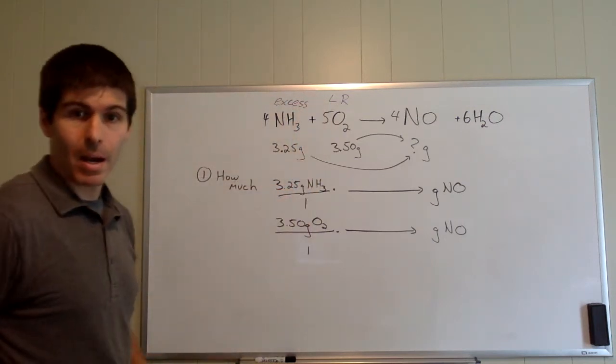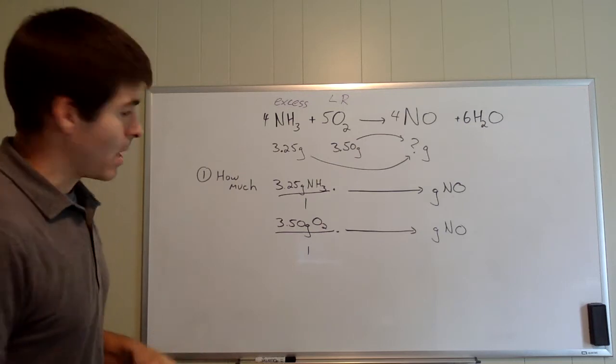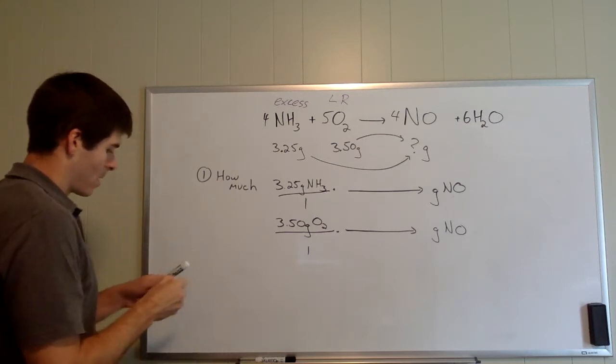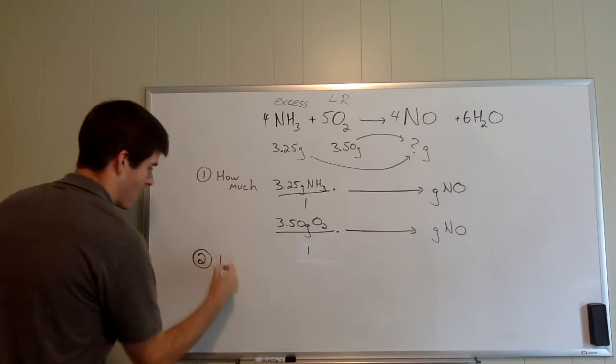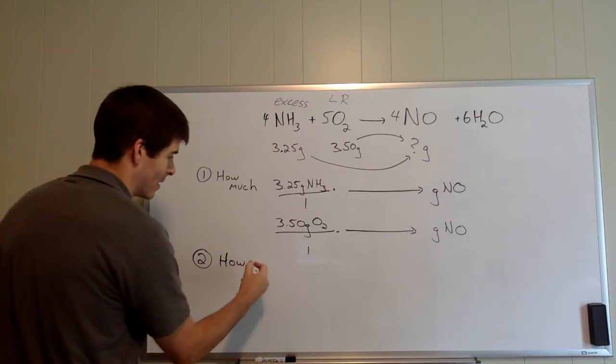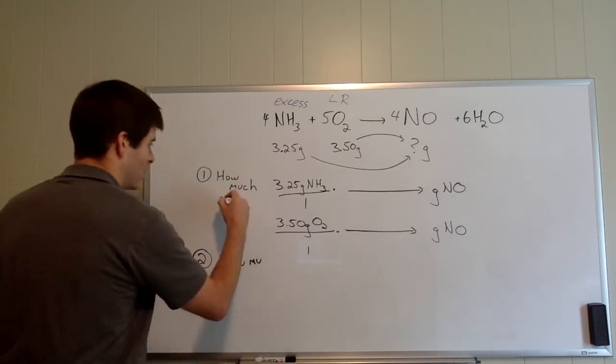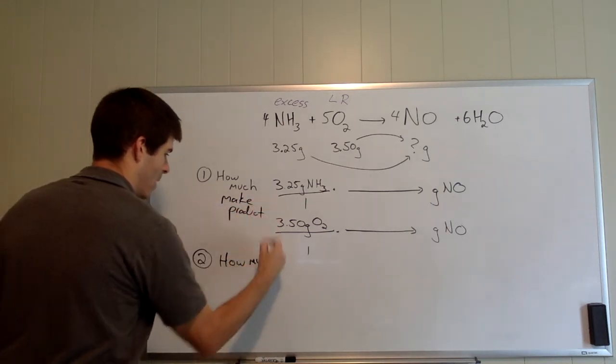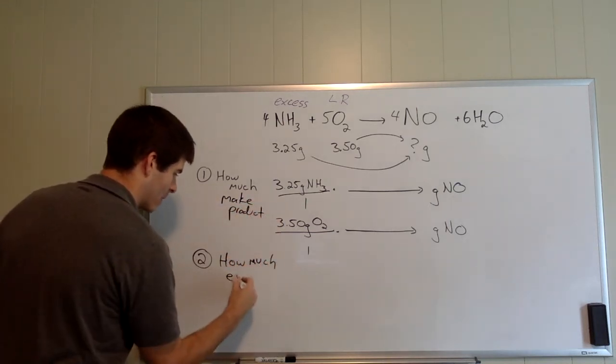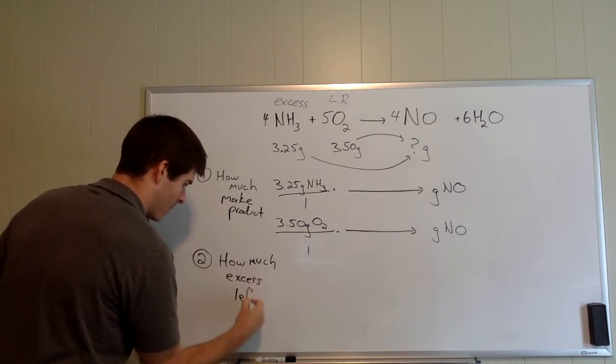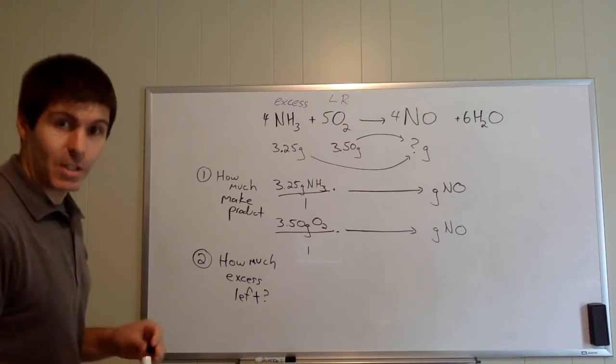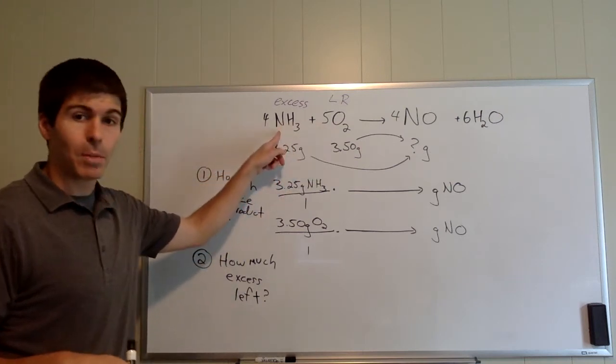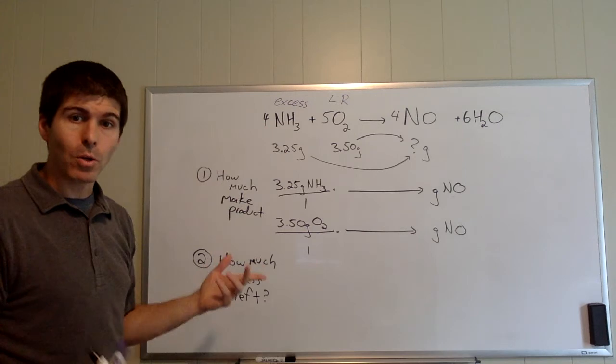So the next question becomes: how much excess is left over? This was how much can we make of the product, and how much excess is left? Okay. So oxygen is going to run out first, and we need to know how much ammonia is going to be left. How do we do that? Well, we need to convert the oxygen to the ammonia.